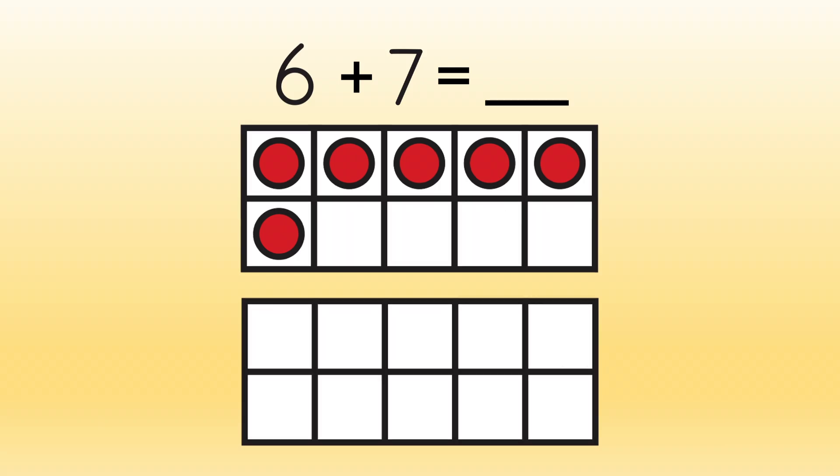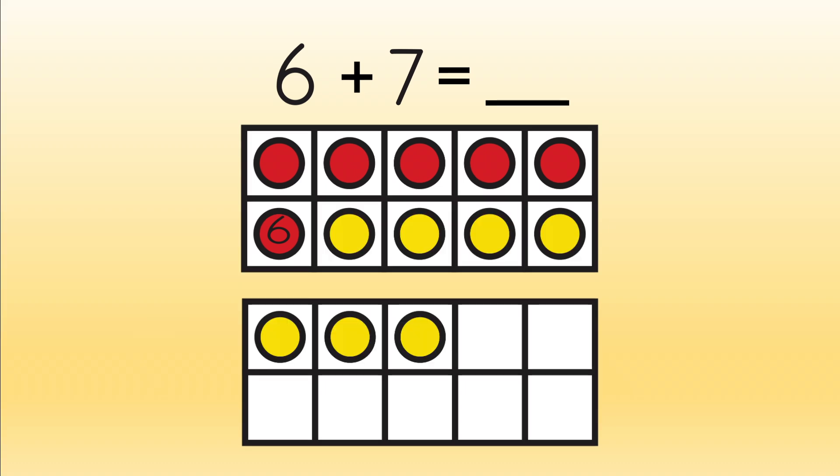So, we know we have six to start. So we can start counting here and count up to find the answer. Seven, eight, nine, ten, eleven, twelve, thirteen. Now we know that six plus seven equals thirteen.